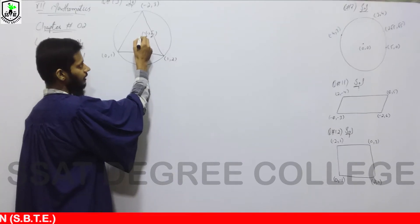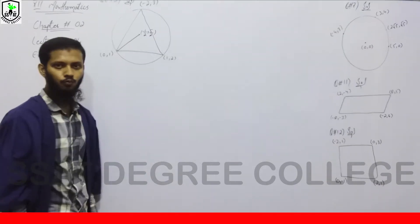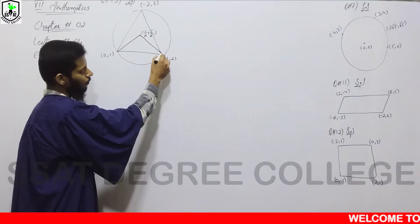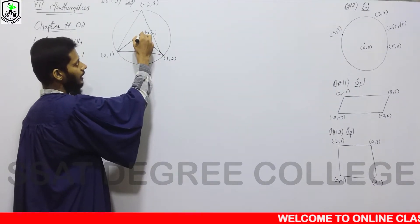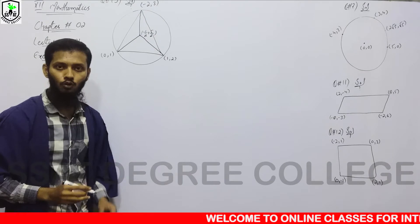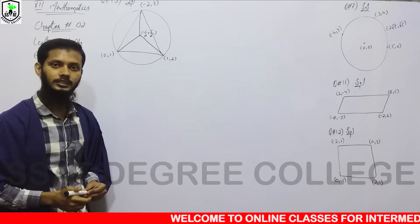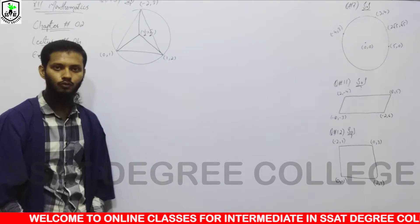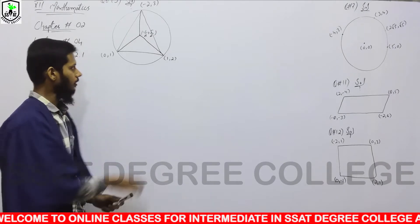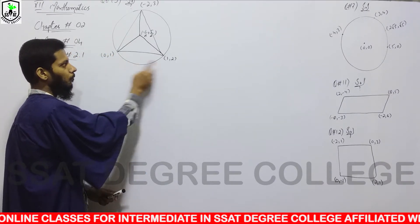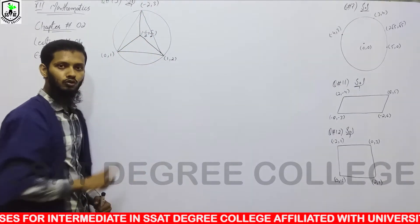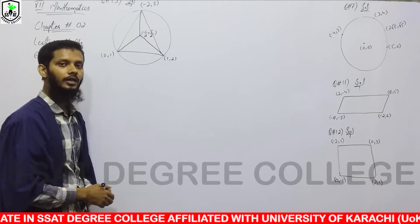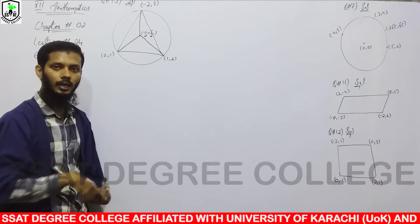मतलब इस center से इस point तक का distance, center से इस point तक का distance, और center से इस point तक का distance — तीनों same होना चाहिए. अगर ये तीनों distances same हुए, तो ये point center का होगा और ये बात proof हो जाएगी. याद रखिएगा — ये तीनों points triangle पर भी मौजूद हैं और circle पर भी मौजूद हैं, क्योंकि circle इन triangle के vertices से pass हो रहा है.